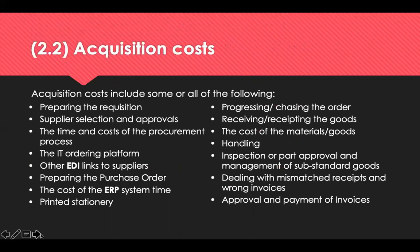Acquisition costs can be categorised into three main groups: preliminary costs, placement costs, and post-placement costs. Preliminary costs are associated with actions that take place before raising the purchase order, for example preparing a requisition and supplier selection approvals. Placement costs are the cost of raising the purchase order and checking that the supplier receives it — this also includes the cost of the stock itself. Post-placement costs are costs incurred after the purchase order has been raised, covering receipt of goods and the approval and payment of invoices.